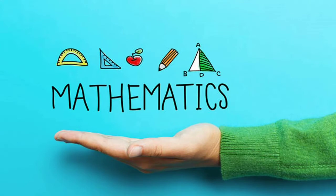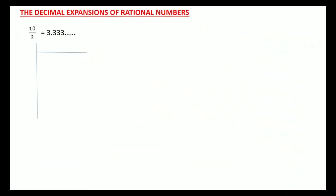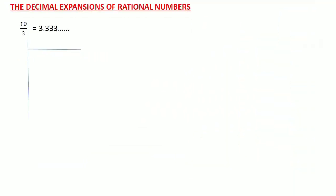Welcome to mathematics session: number system. Let's find the decimal expansions of a few rational numbers. Consider a rational number 10 upon 3. To find the decimal expansion, 10 is divided by 3 — here 10 is the dividend and 3 is the divisor. 3 times 3 is 9; on subtraction we get 1 as the remainder.